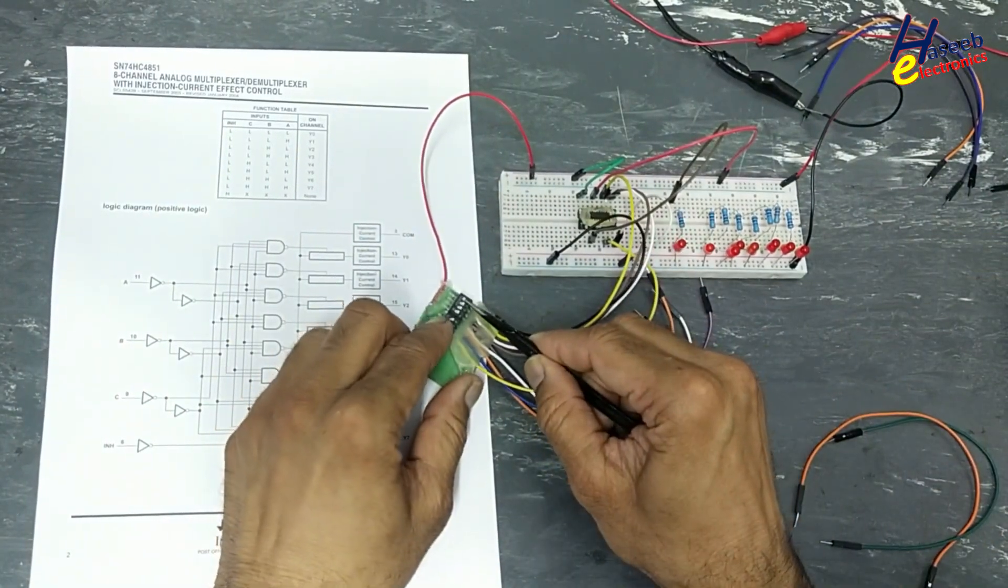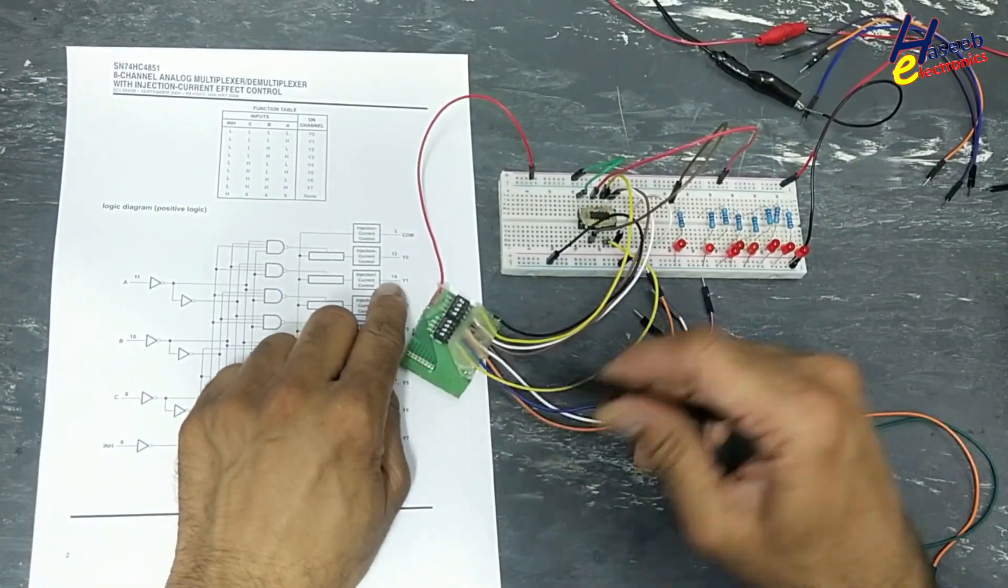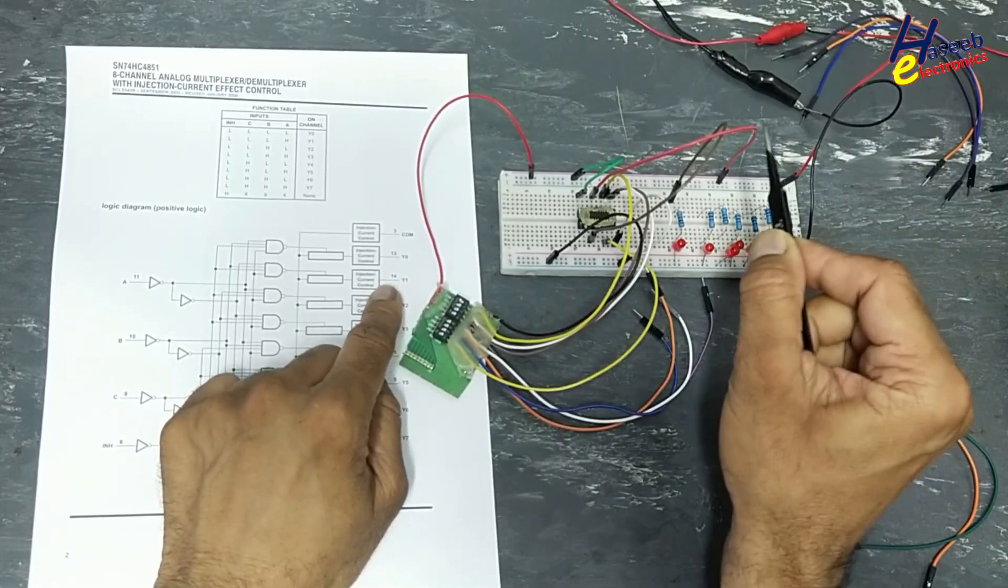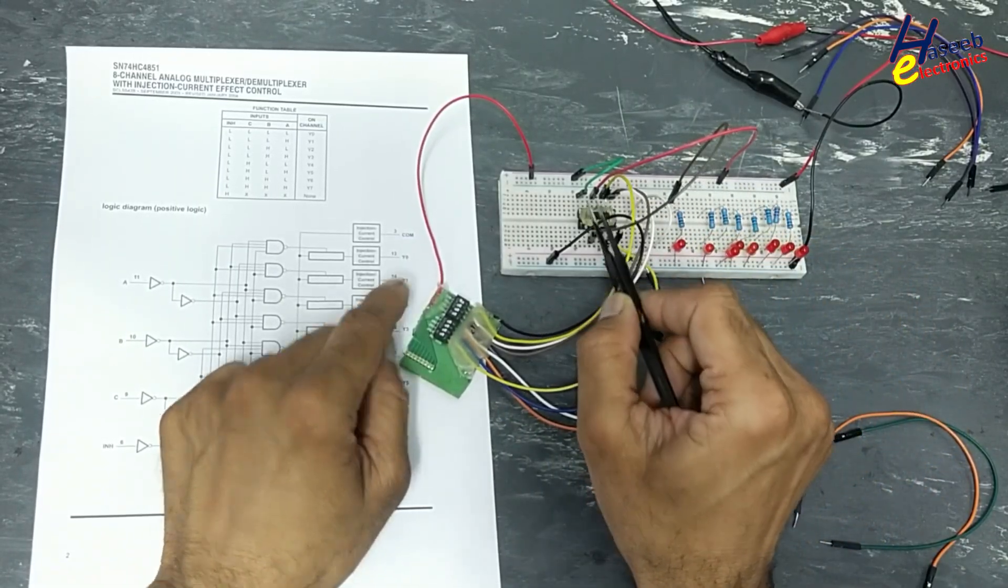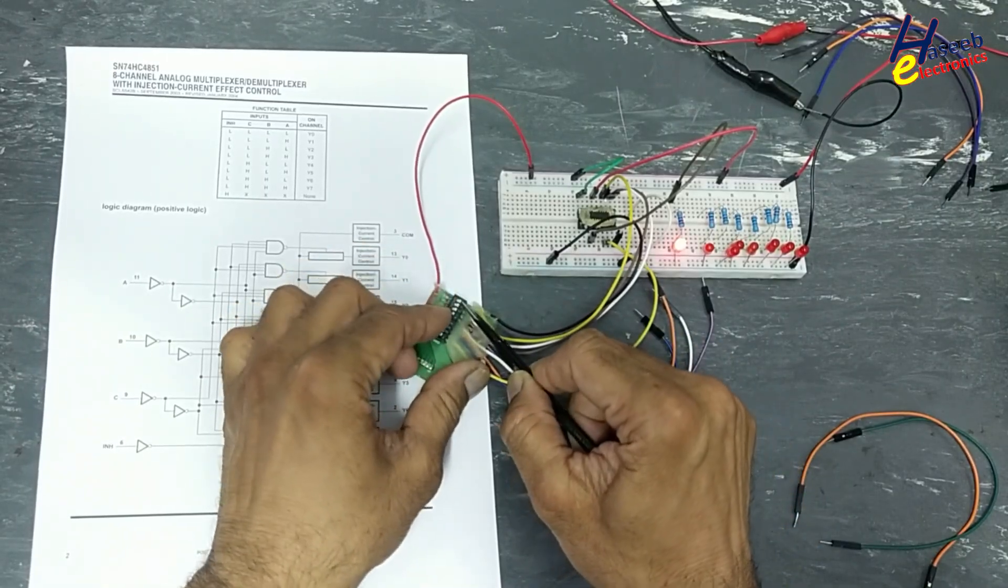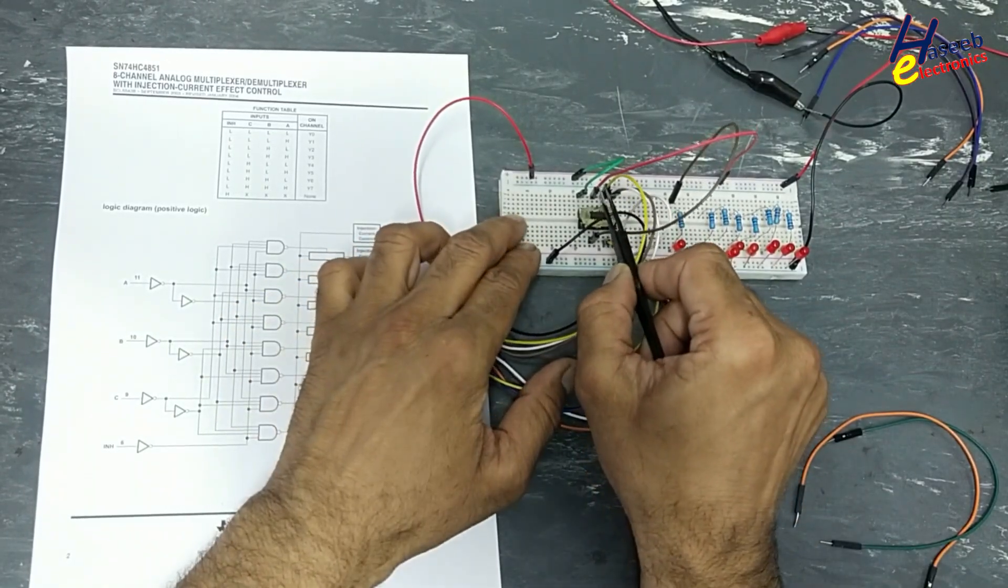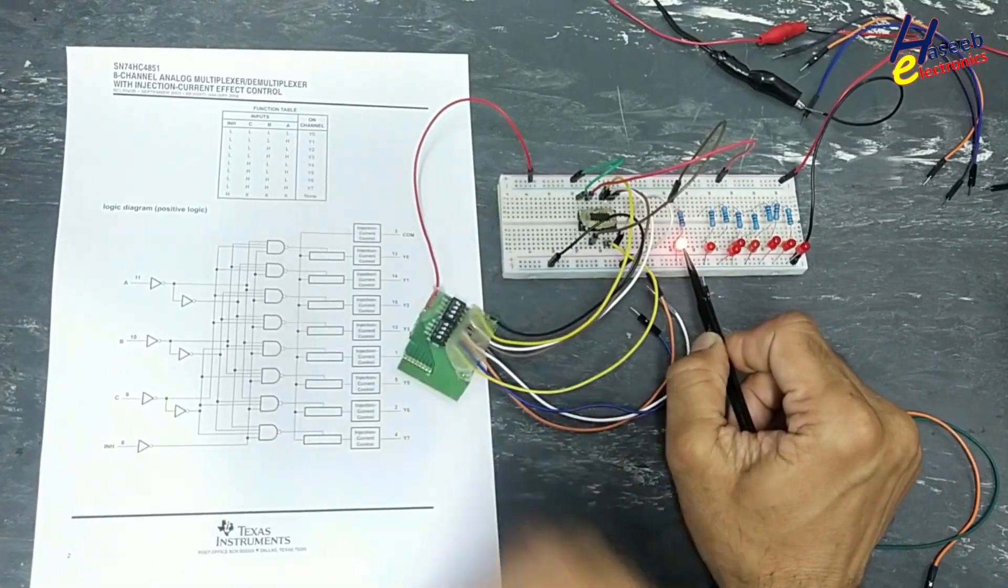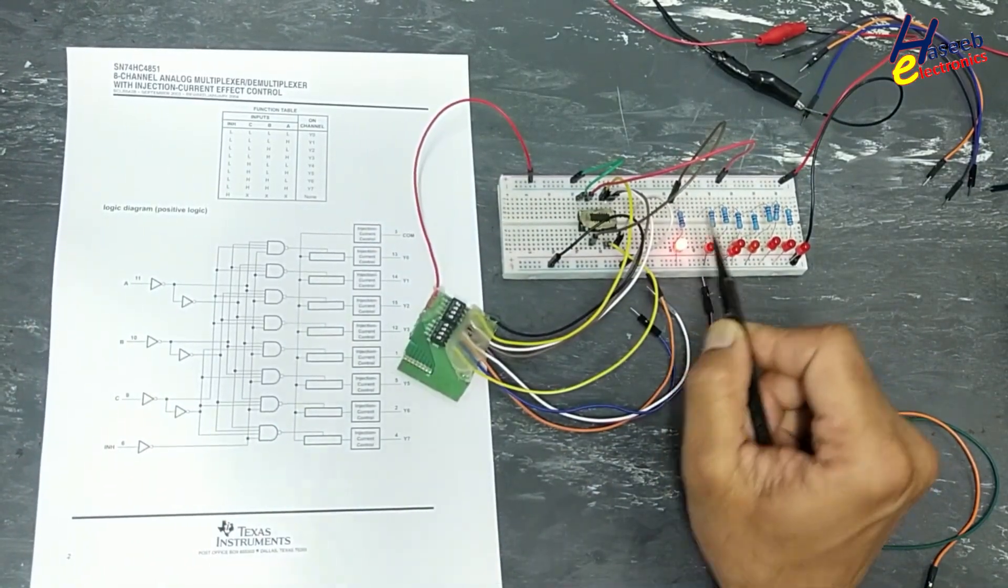Zero zero one. Now pin number 14 will be selected. The same pin number 13 is now off because pin number 13 address is zero zero. But now pin number 14. We selected pin number 14. Pin number 14 is now in line.